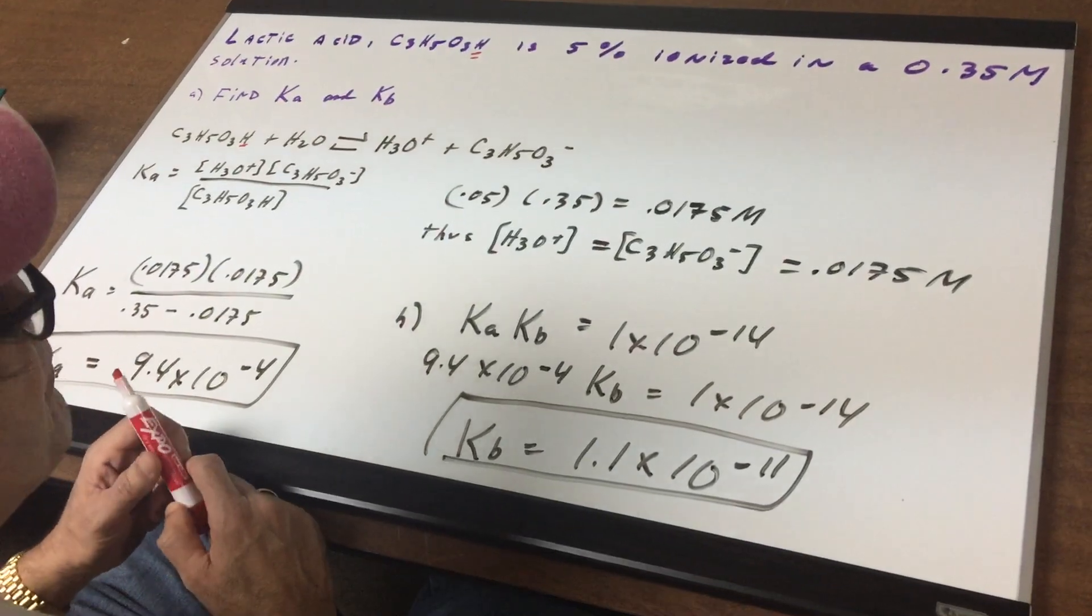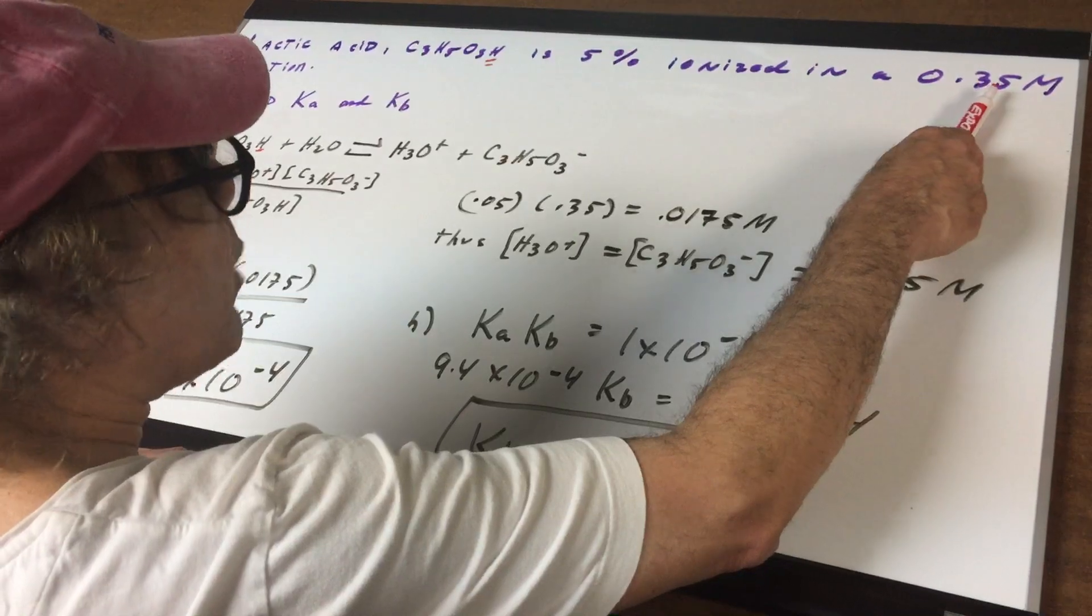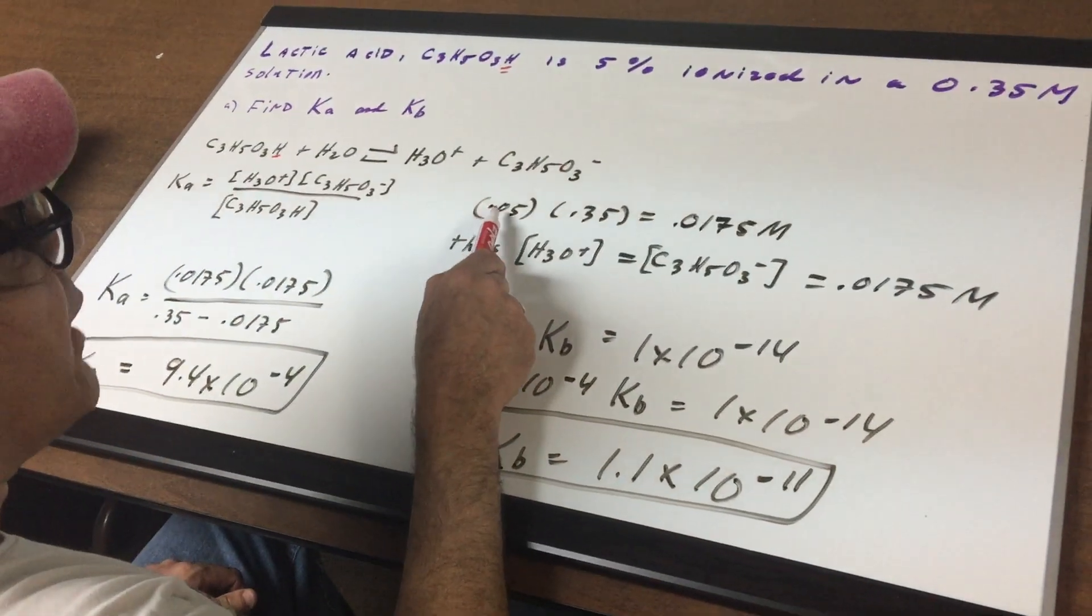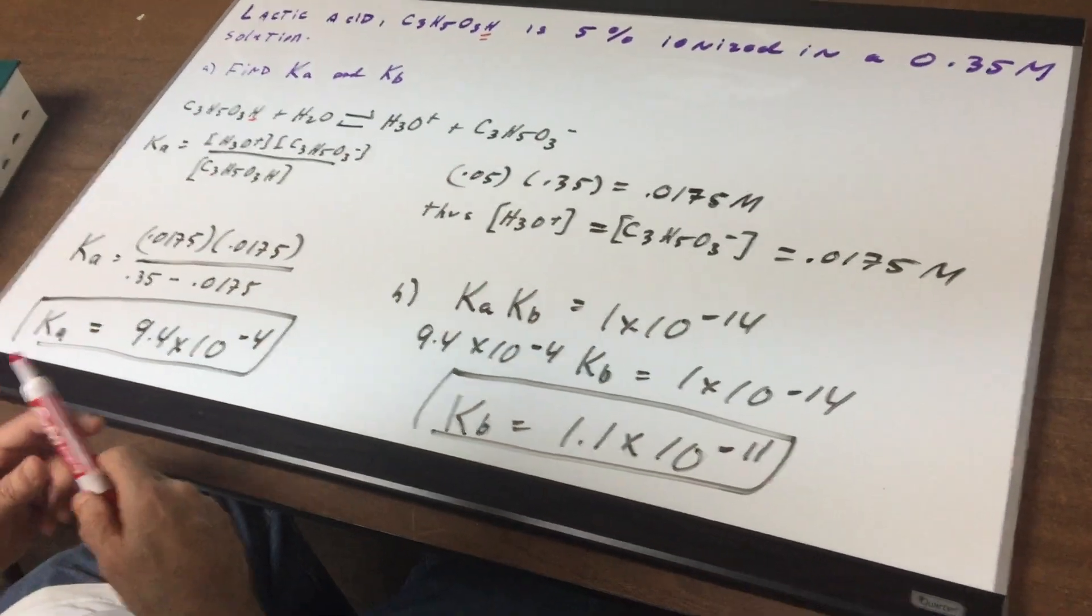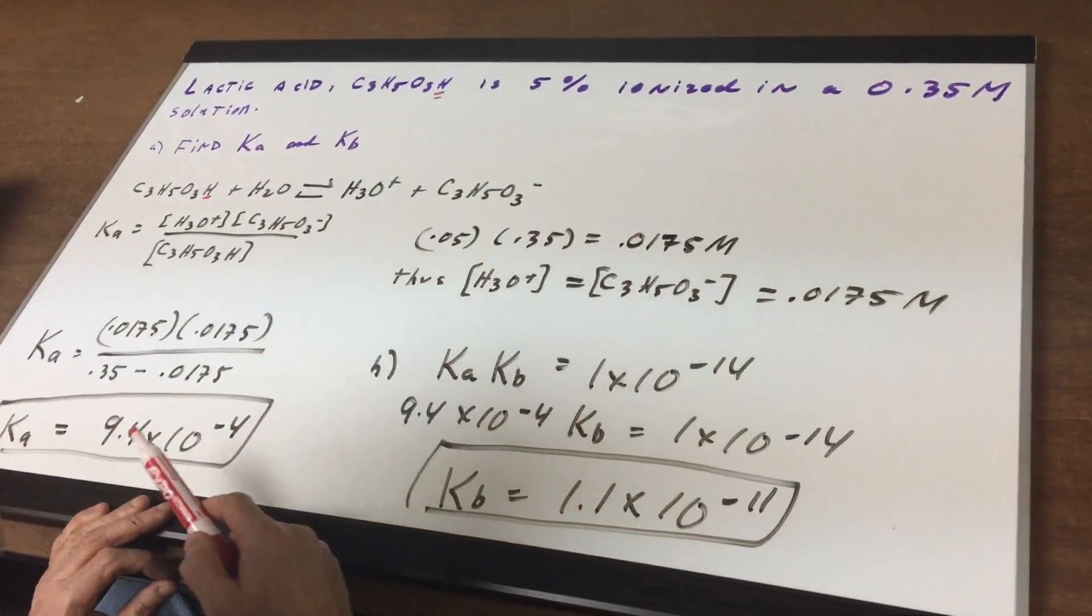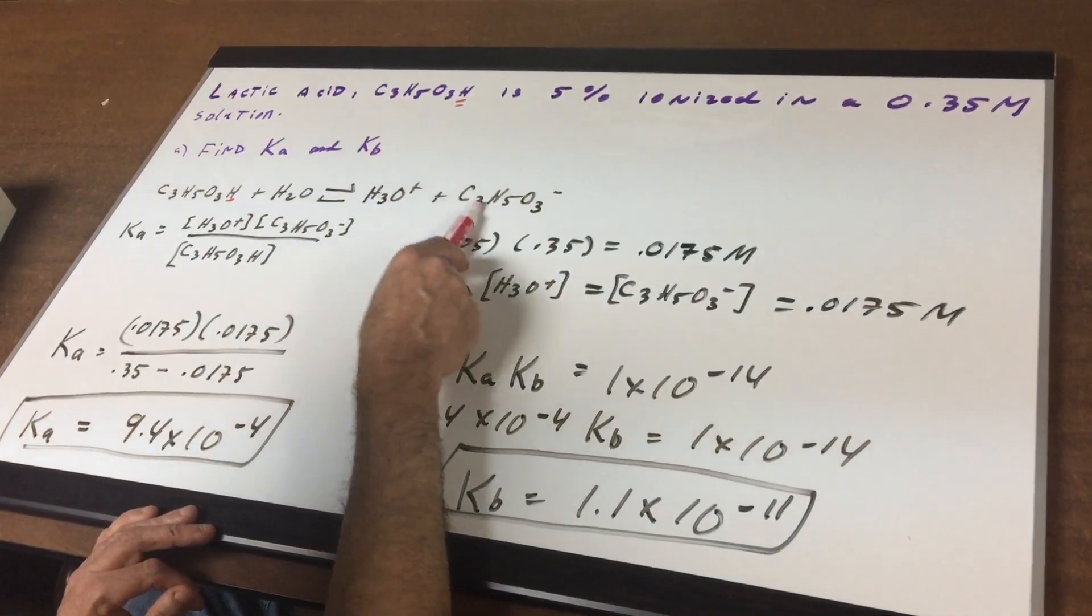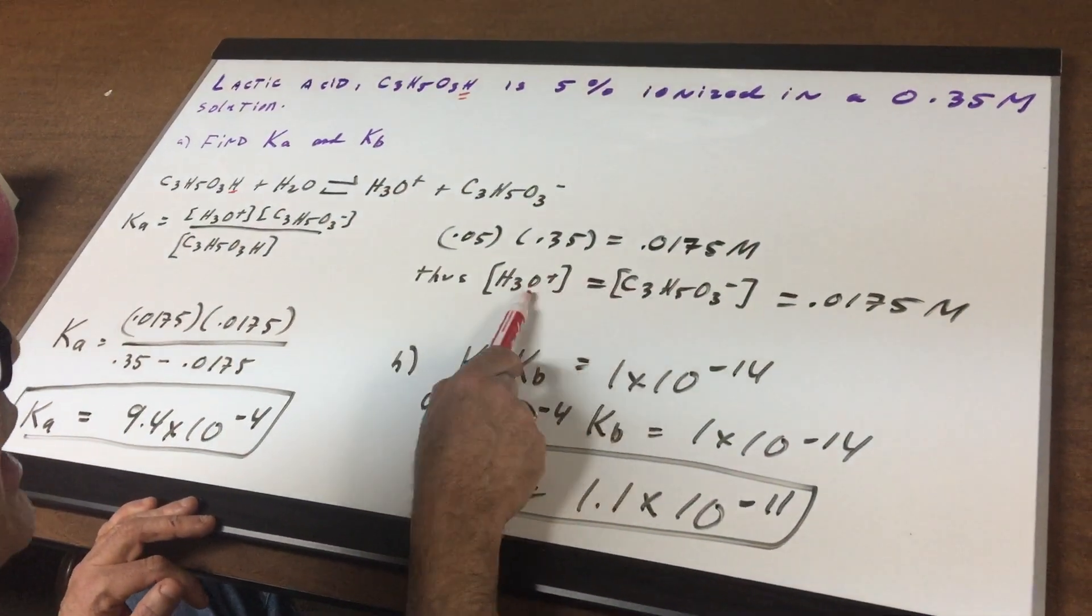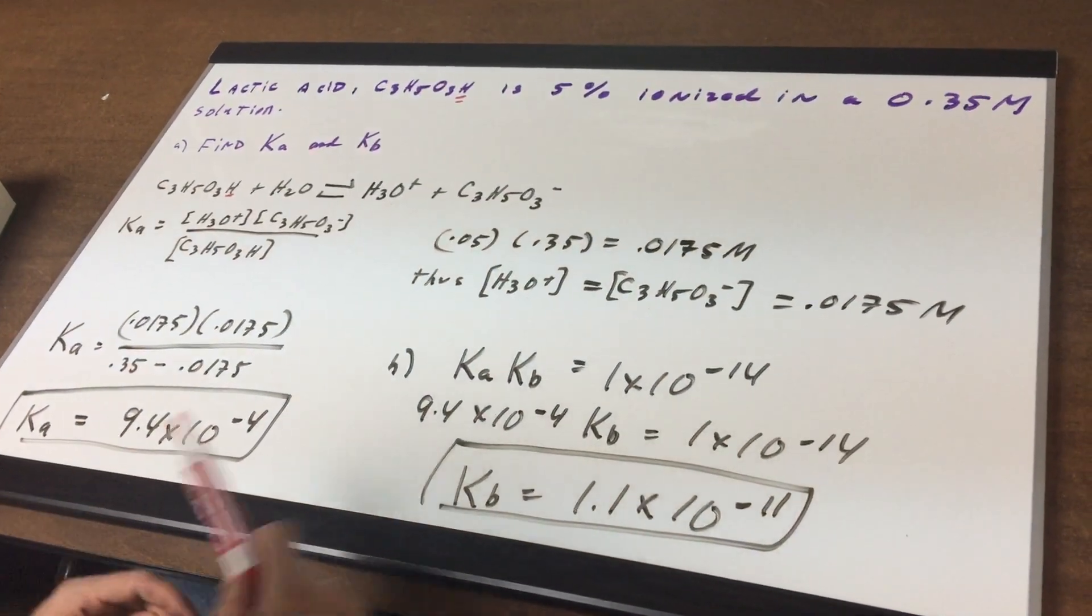Now what does five percent mean? Five percent means that five percent of this is what broke up. So if you multiply 0.05 times 0.35 you get 0.0175 molar. That's how much has been broken up. Since this is a one-to-one ratio that means they're equal in concentration and therefore they're both equal to 0.0175 molar.